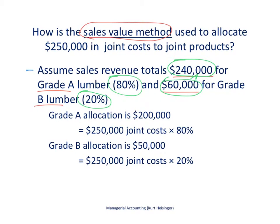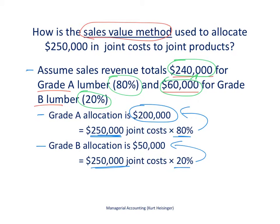Therefore, 80% of our joint costs — 80% of $250,000 — will be allocated to grade A lumber, which equals $200,000. For the grade B allocation, 20% times $250,000 means we allocate $50,000 to the grade B lumber. This is another way to allocate joint costs, called the sales value method.